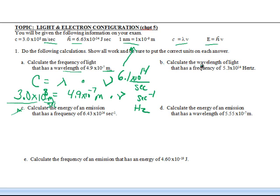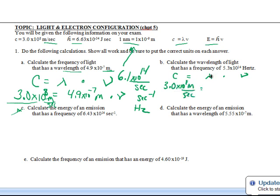Question B: calculate the wavelength of light that has a frequency of... So again, we're going to use the same formula because it's got wavelength and frequency. Write your formula out. Underneath speed of light, put 3.0×10⁸ meters per second. Then we've got wavelength - we don't know what it is, so we leave it as a variable. And then frequency is going to be 5.3×10¹⁴. Hertz is here, you could also write per second or second negative 1.